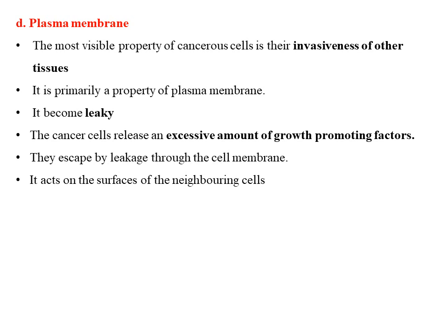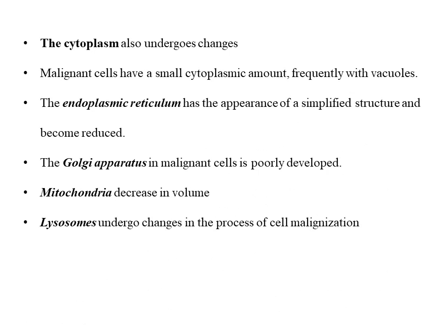These growth-promoting factors act on the surfaces of neighboring cells after leaking out, resulting in a dramatic surge in growth and cell multiplication in those normal cells, which also become abnormal in shape and size. The cytoplasm in cancer cells also undergoes changes; sometimes new structures will appear, or normal structures may disappear. The accumulation of ribosomal RNA or messenger RNA in the cytoplasm makes them basophilic.